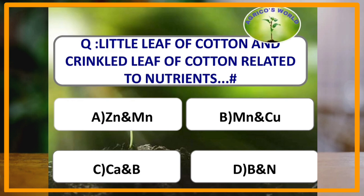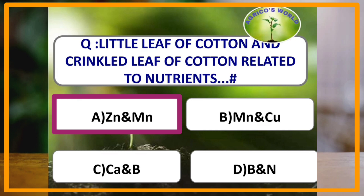Little leaf of cotton and crinkle leaf of cotton are related to which of the following nutrients? Little leaf is caused due to the deficiency of zinc, and crinkle leaf of cotton is caused due to the toxicity of manganese. So the answer is both zinc and manganese.